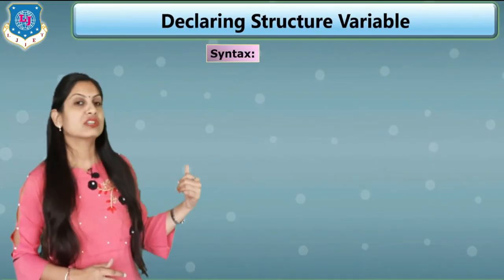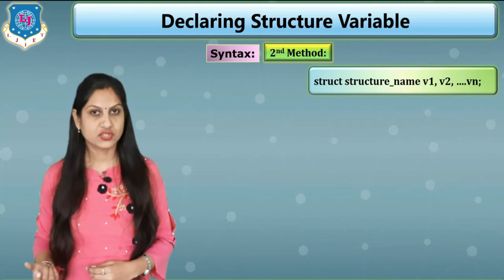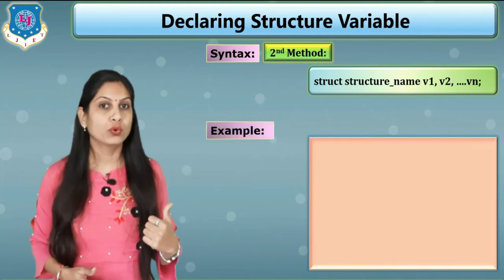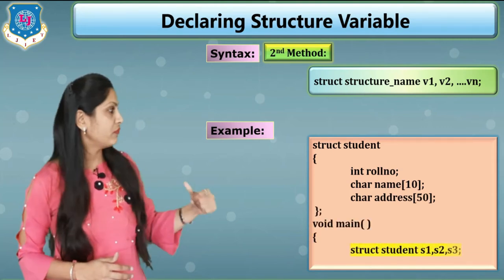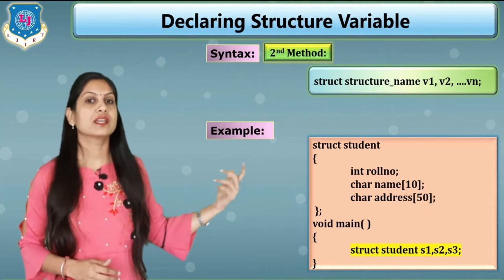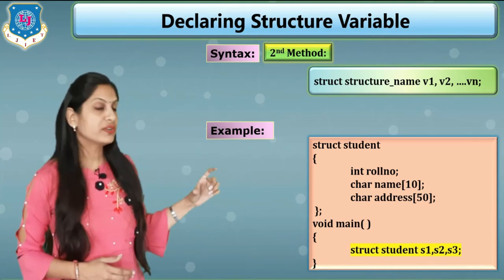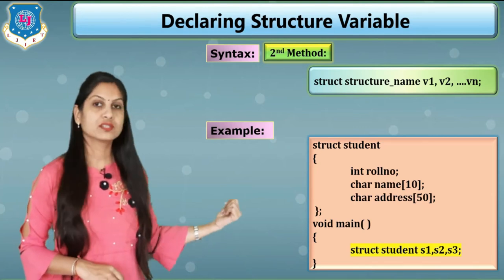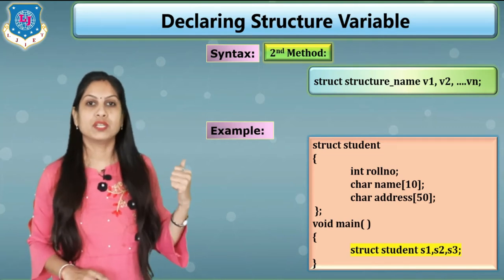The second method is totally different and must be written inside void main. The syntax is: keyword struct, then structure name, then variables v1, v2, up to vn. The structure definition is written before void main, and inside void main you use the second method. For example, struct student with members integer role number, character name[10], and character address[50] is defined before void main. Inside void main: struct student and three variables s1, s2, s3 — meaning you can store three students' data.